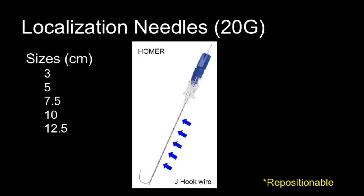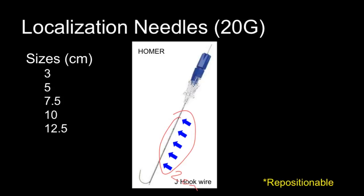The repositionable Homer needle wire apparatus comes in a variety of lengths from 3 to 12.5 centimeters. The clear hub is attached to the needle and held during positioning; the blue portion is attached to the wire. The blue portion is partially pulled back prior to needle placement and then advanced and locked into place once the needle is appropriately positioned. There are black markings along the needle shaft at one-centimeter intervals starting at the two-centimeter mark from the needle tip, aiding initial advancement and subsequent retraction.